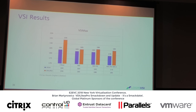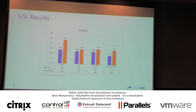We're seeing about another 5% when going from XenServer 7.2 to 7.4. We'll continue to produce more results — there'll be a blog out about 7.4 soon.